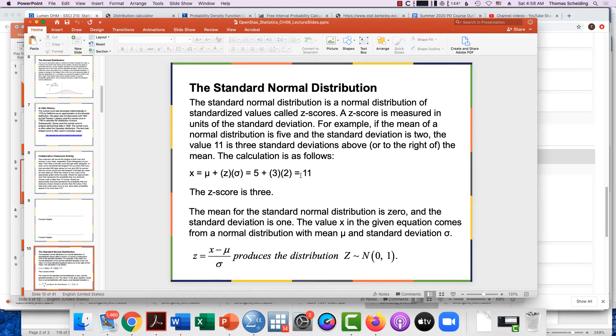The example given here is if the mean of the normal distribution is 5 and the standard deviation is 2, the value, the Z-score is 11—sorry, the value of 11 is three standard deviations above or below that mean.